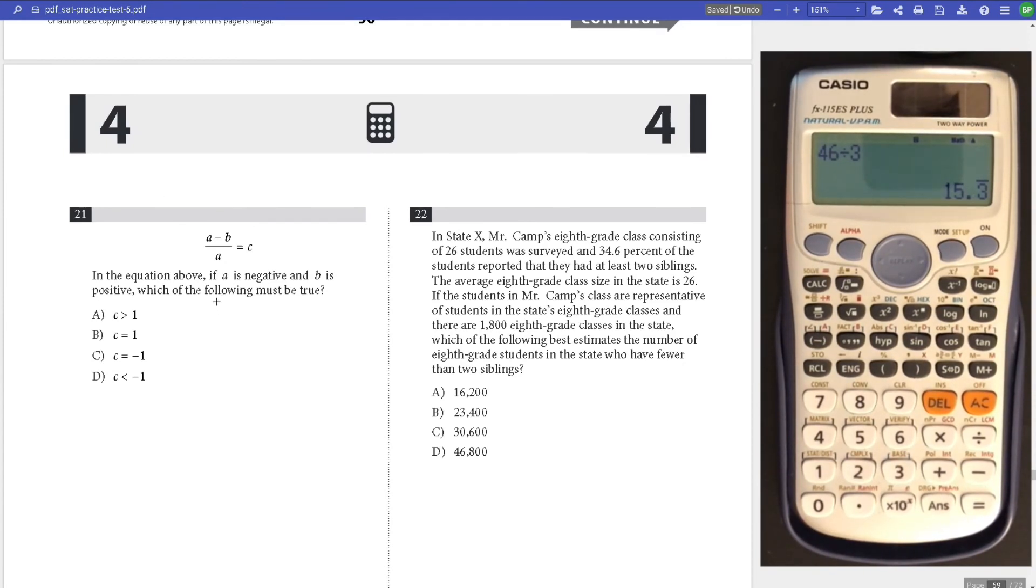Number 21, which of the following must be true if A is negative and B is positive? If this is negative and this is positive, that means this is negative. That means C is always positive, so can't be these. Because we're subtracting another number, the negative becomes bigger, but A remains the same. In the end, it's bigger than A. Answer is A.